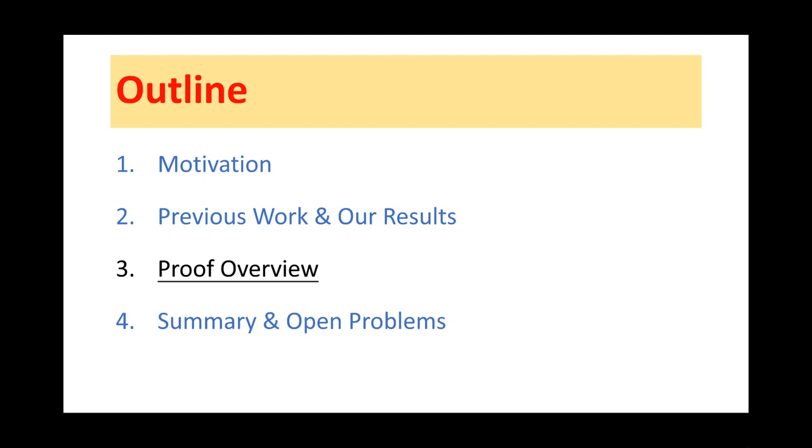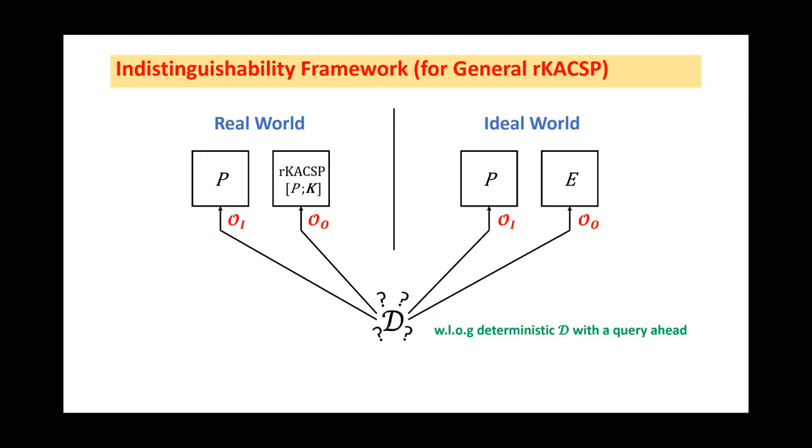Okay, we now move to the third part. In this part, we will show you an overview of our proof. At first, let's make clear the indistinguishability framework. The adversary D can interact with two permutation oracles, denoted as Oracle Inner and Oracle Outer. There are two worlds. In either world, the inner oracle is a URP, denoted as P. The outer oracle in ideal world is an independent URP, denoted as E. While in real world, the outer oracle is the rKACSP computed from the P under a random key.